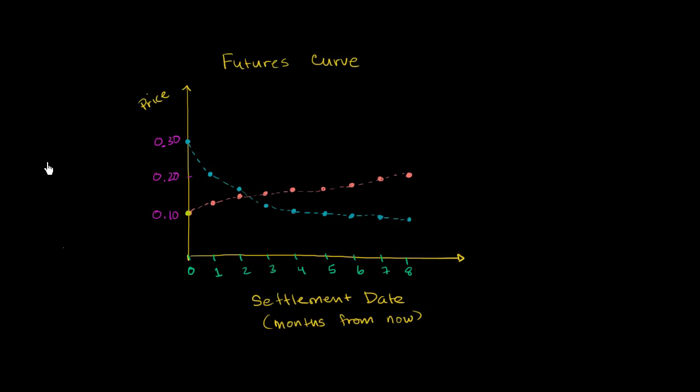Let's see if we can understand a thing or two about futures curves. I've drawn two futures curves here, and really all they show is the different settlement prices for the different delivery dates of futures. So let's say that this orange curve is one of them. What this says is...